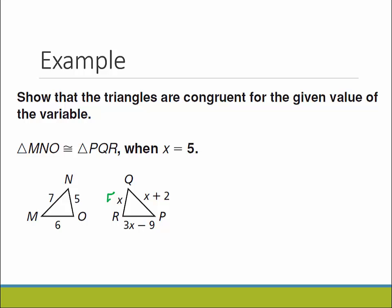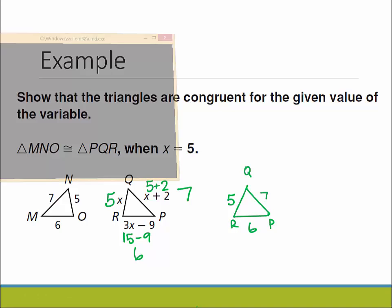If we plug this in, we get 5 here. 5 plus 2 gives me 7, and then I get 15 minus 9, which is 6. So this QRP really has side lengths of 5, 7, and 6.